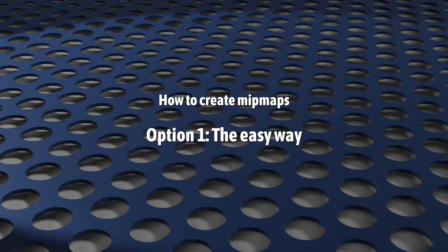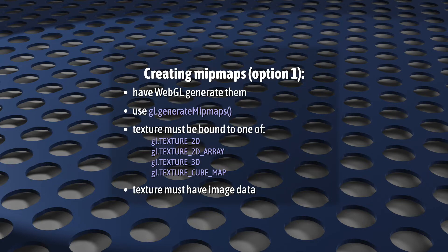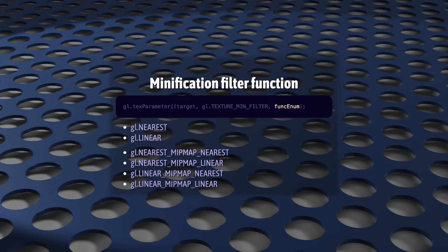To get mipmaps happening in your application, you have two options. By far the easiest is to have WebGL generate them for you. This is done using GL generate mipmaps. Generate mipmaps is available to you after you've bound to one of these four texture targets, and after you've uploaded a base image. In all of our examples so far, we've been using texture 2D as our target, so that's what we'd specify here. If you're unclear on what targets are, I have an entire video on that. Link in the description.